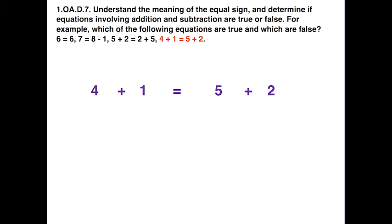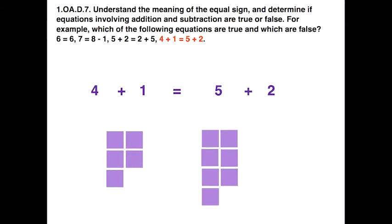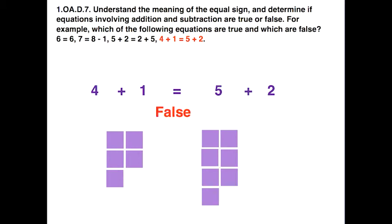Let's take the last example given in the standard — 4 plus 1 equals 5 plus 2 — and do a physical representation so students can see what happens on each side of the equal sign. On the left-hand side we've represented 4 plus 1; on the right-hand side, 5 plus 2. Students will realize they have 5 on the left and 7 on the right, so that is a false statement — those are not equivalent. Rearranging the quantities on each side of the equal sign makes it even easier to see there are more on the right than on the left.